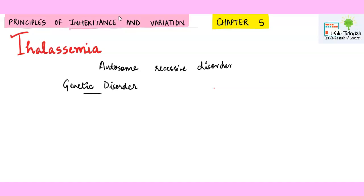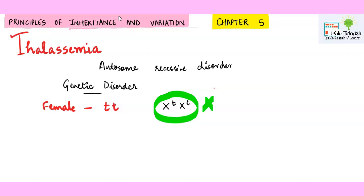Autosomal recessive disorders are ones in which there is some problem in the autosomes — maybe a particular gene has not been synthesized or a part of the gene has been deleted. The person affected from thalassemia carries two recessive alleles, represented as small t, small t. You will never show the thalassemia disorder on the sex chromosomes, as this is an autosomal recessive disorder.